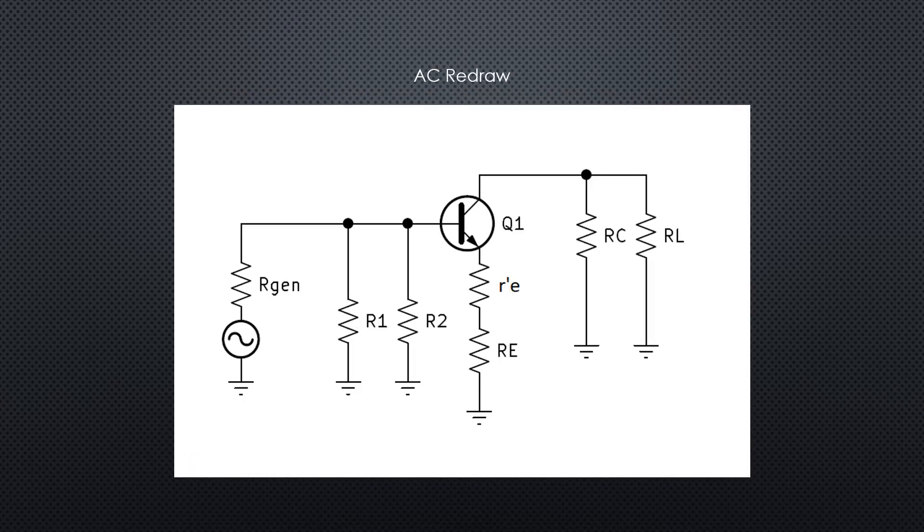Here's the AC redraw. You can see the DC power supply is acting like an AC ground. The coupling caps are acting like shorts and now we've included r prime E, the AC resistance for the transistor.